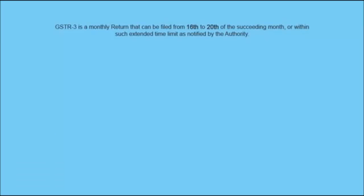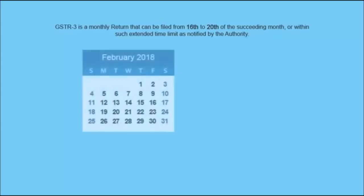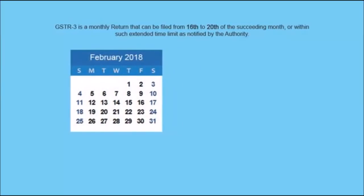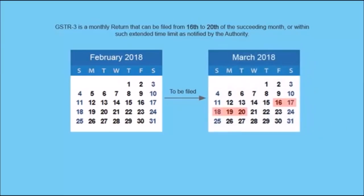GSTR 3 is a monthly return that can be filed from the 16th to 20th of the succeeding month or within such extended time limit as notified by the authority. For example, GSTR 3 for the month of February 2018 needs to be filed between the 16th and 20th of March 2018.